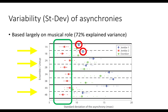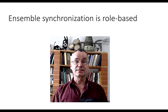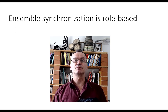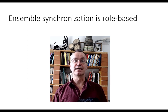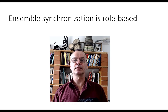By contrast, the lead drum always shows the highest variability. Similarly, the mean signed asynchronies also evidence a role-based behavior where the lead drum tends to play slightly ahead of the other instruments, whereas the second djembe and especially the dundun tend to lay back. In summary, in the first step of analysis we established that in djembe music, ensemble synchronization is consistently based on musical role and does not strongly depend on individual or ensemble idiosyncrasies.